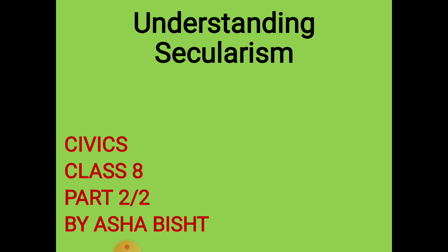In the first part, we studied about the meaning of secularism and understood what secularism is all about. We also studied the objectives a secular state should keep, and we compared other democratic countries with India. Now let us begin with the second and last part of this chapter.